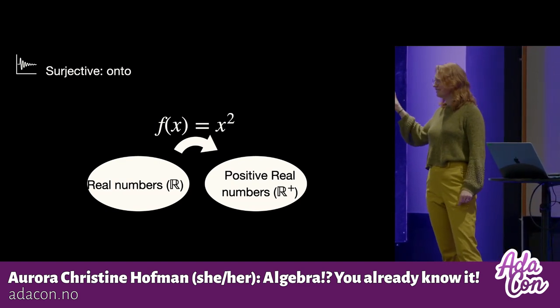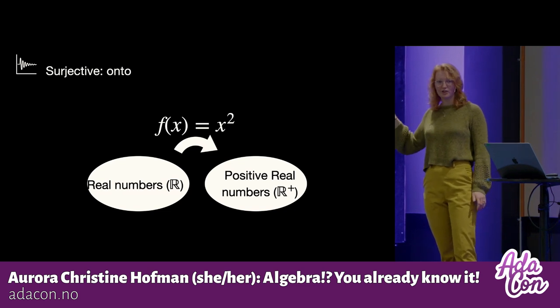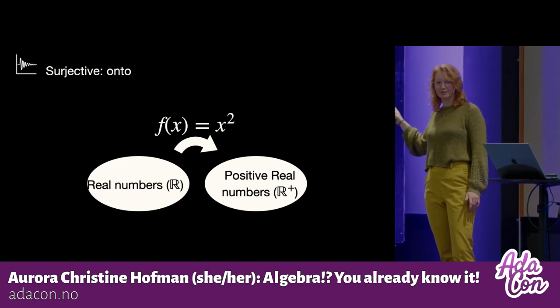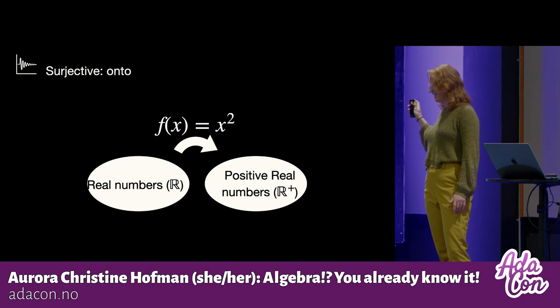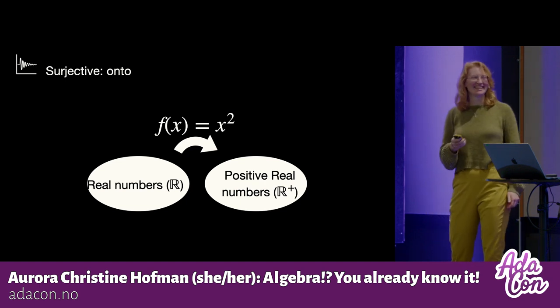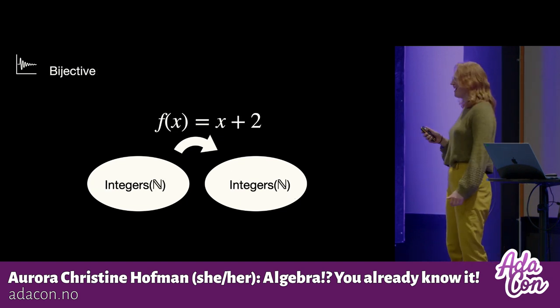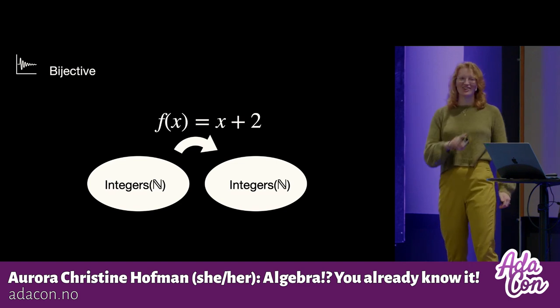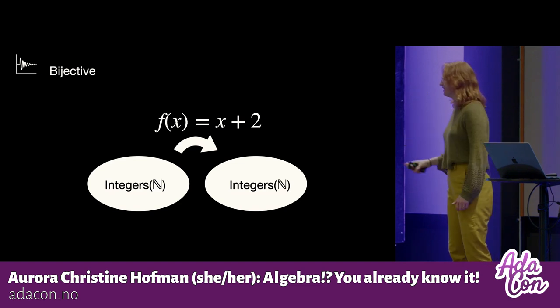But there are actually several values in our domain that map to the same point. All right? You still with me? Great. If I want the possibility to move in circles, I need both of these properties.